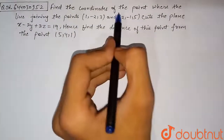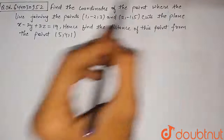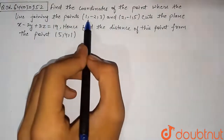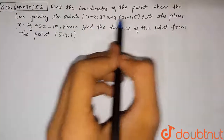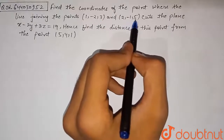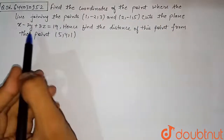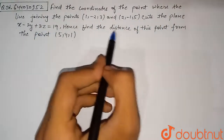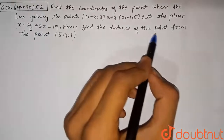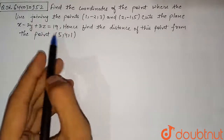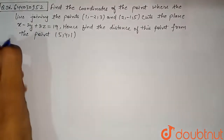Find the coordinates of the point where the line joining the points (1, -2, 3) and (2, -1, 5) cuts the plane x + 2y + 3z = 19, and find the distance of this point from the point (5, 4, 1).